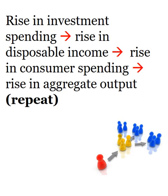So now we have the domino effect happening. It started with the rise in investment spending. That led to an increase in disposable income for those households who receive the money. When they get more disposable income, they're going to be able to do more consumer spending. If businesses are noticing that households are buying a lot more stuff, they're going to increase their output to keep up with that increase in demand. And that increase in output will require an increase in investment spending to produce those additional goods, setting this chain of events in motion again.